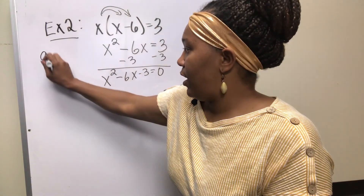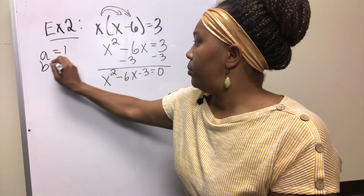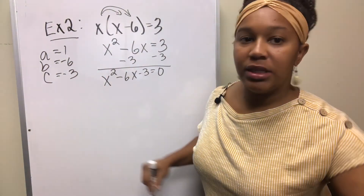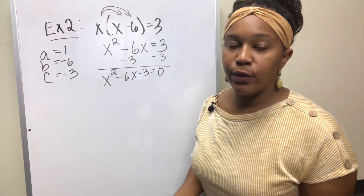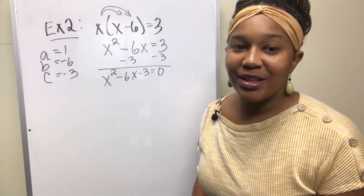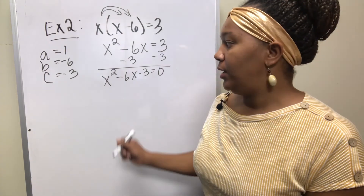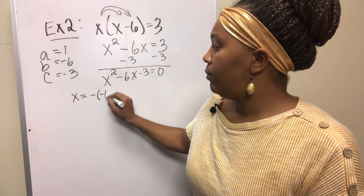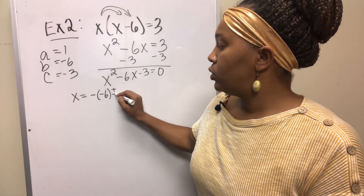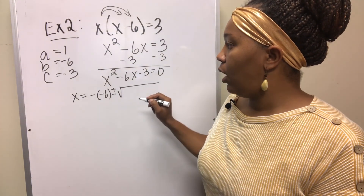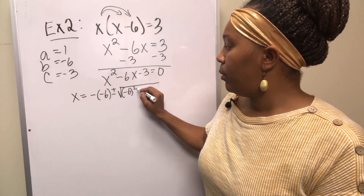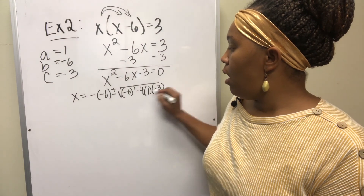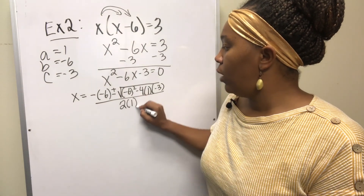Now it's in the form of a quadratic equation. Identify your a which is 1, your b which is negative 6, and your c which is negative 3. Once you have your a, b, and c, the rest is just plugging into the formula. Slowing the song down to plug in: x equals negative B plus or minus square root of B squared minus 4AC, all over 2A.